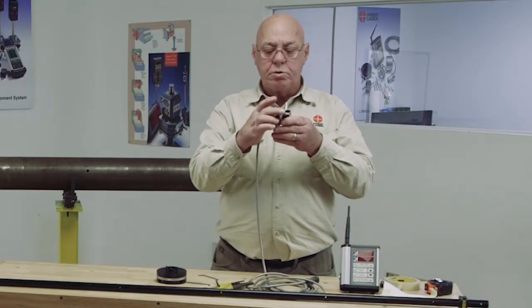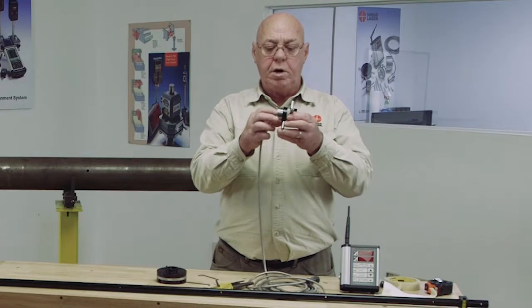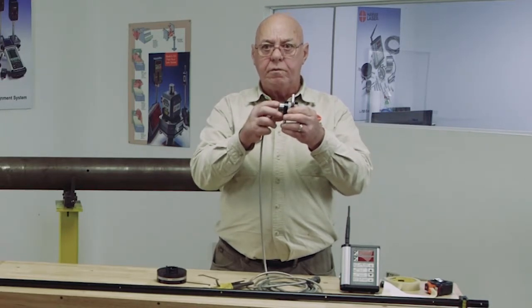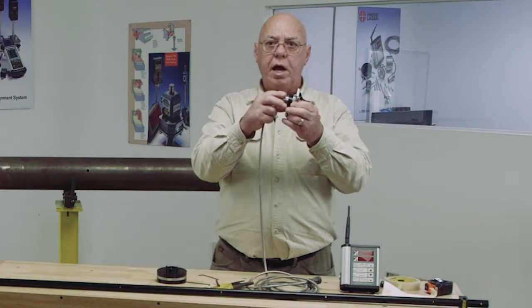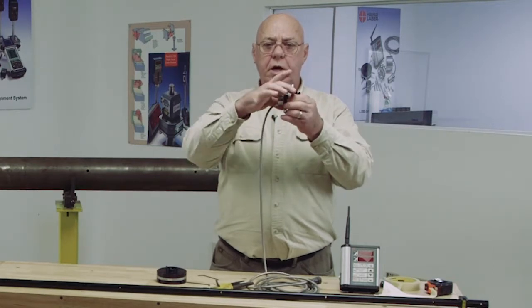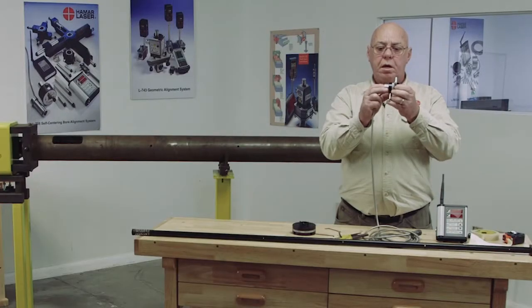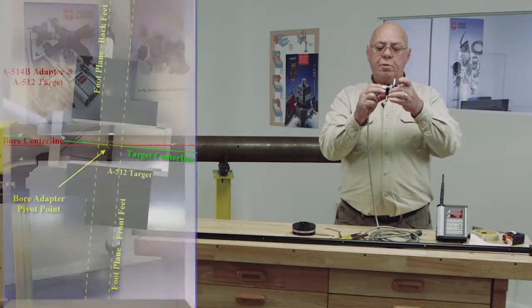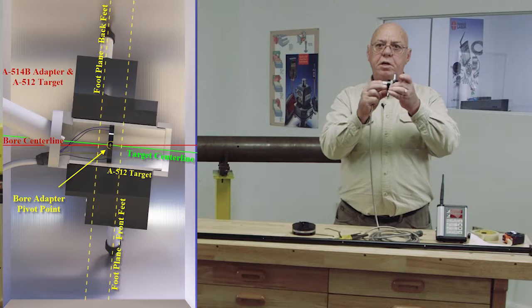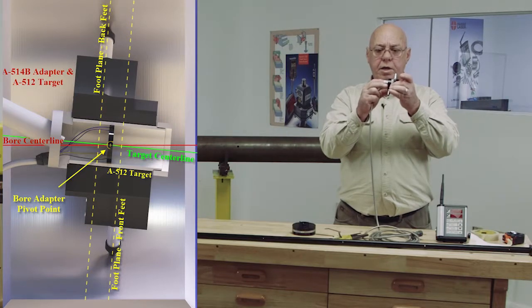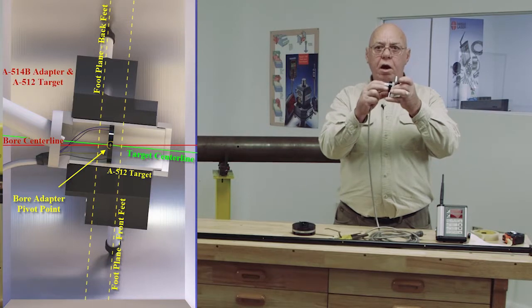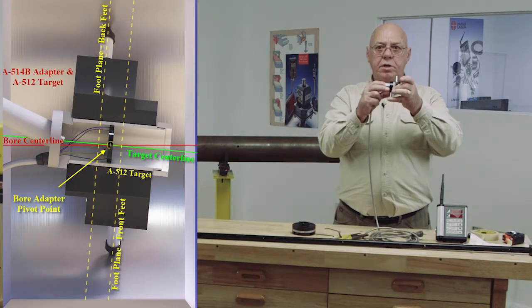Now the legs are in there, and these legs are pushed up against the OD of this target. This is what we call a true self-centering target with no moving parts. These legs are a little bigger than the bore itself, so when I put it in, it's going to be at an angle. But right here in the middle where this pivots, that's where our measuring plane is at. This can change its angle all day long and it's always going to stay self-centered.